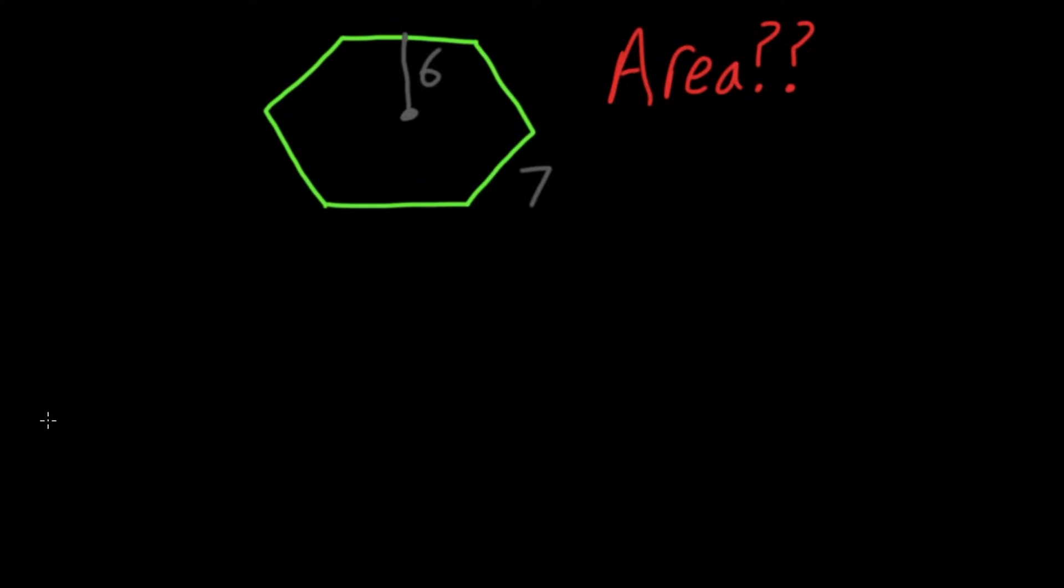Like most shapes, we find the area of our hexagon using the formula. The formula for the area of a hexagon is A equals one-half times a times P. In this formula, we have a and P.